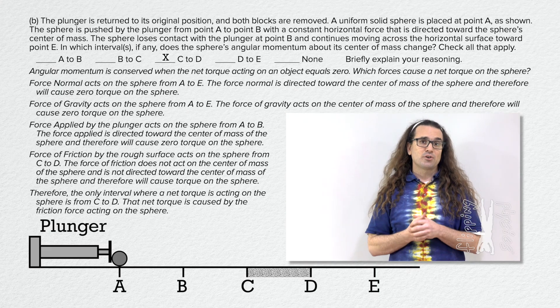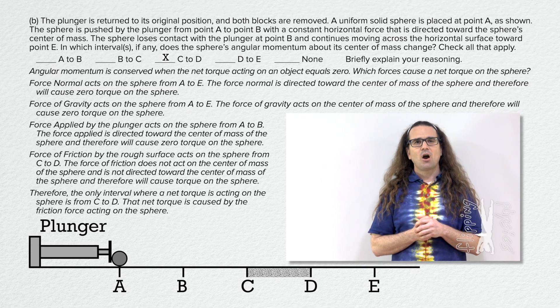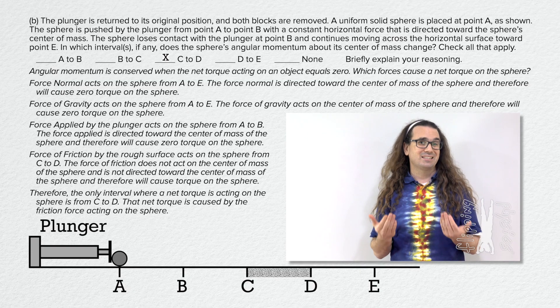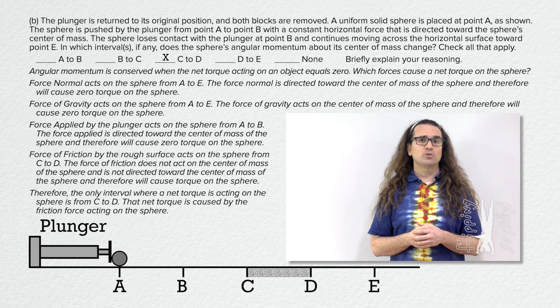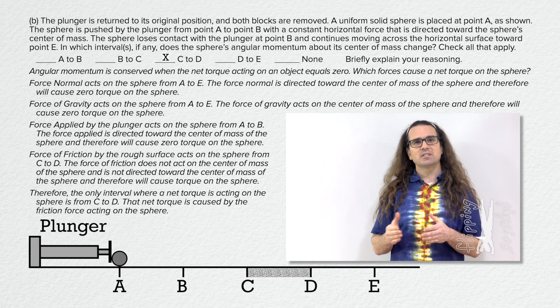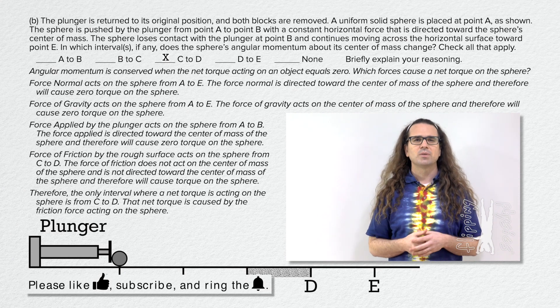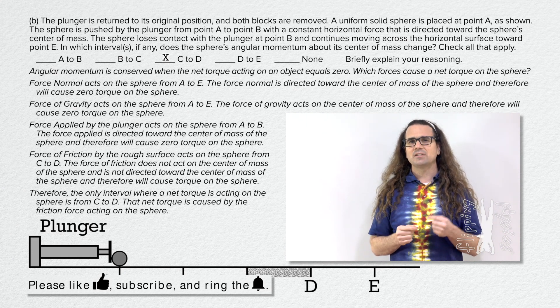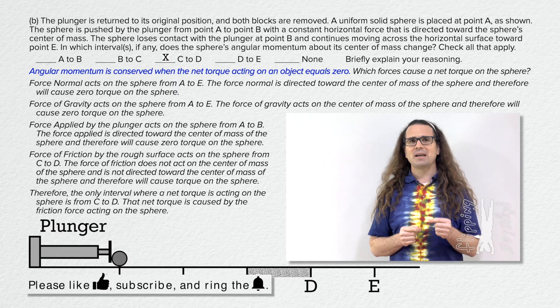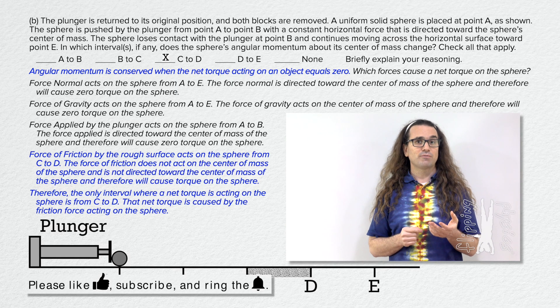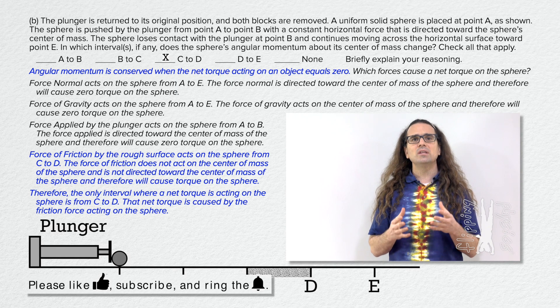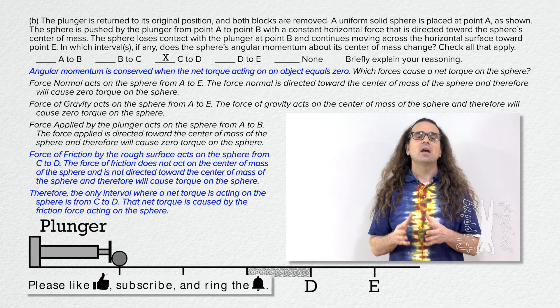And I have another note about grading. Our explanation for part B in this video is a bit excessive. My goal is for you to truly understand all the physics here, which is a bit different than simply answering the free response question. You really only need to say that change in angular momentum is caused by net torque and that the force of friction from C to D is the only force which causes a net torque, and explain why.